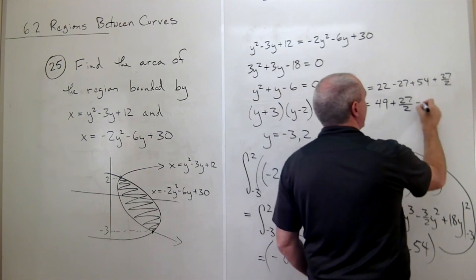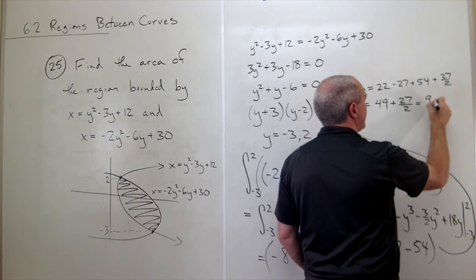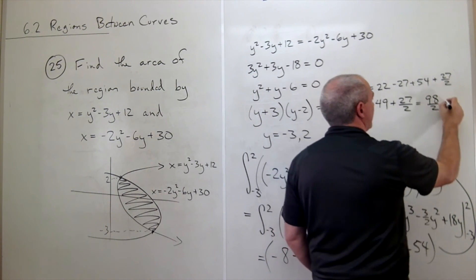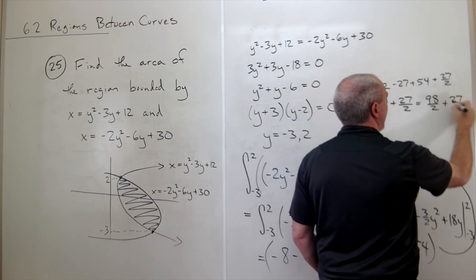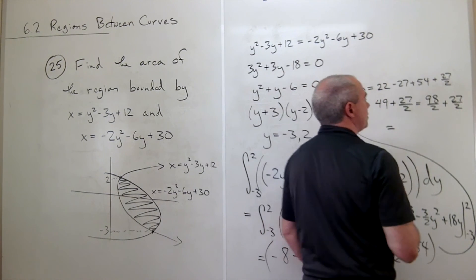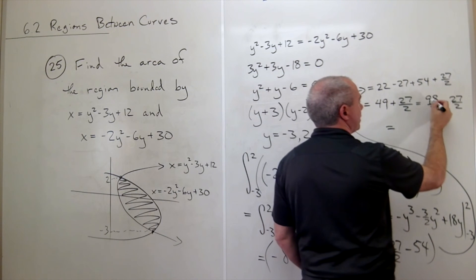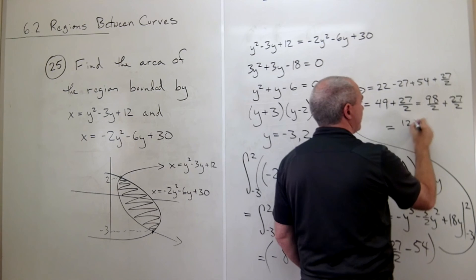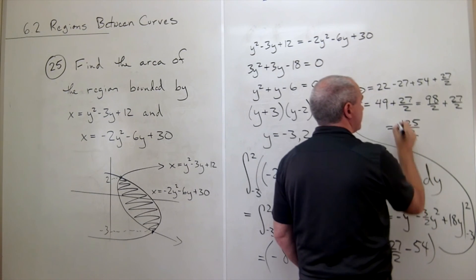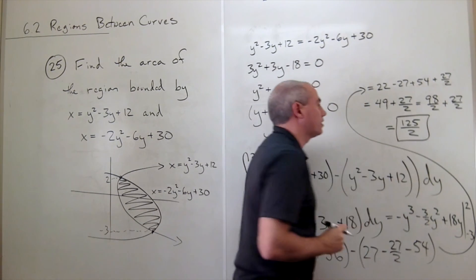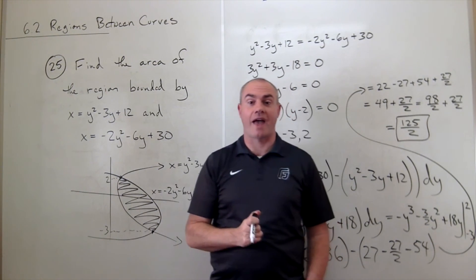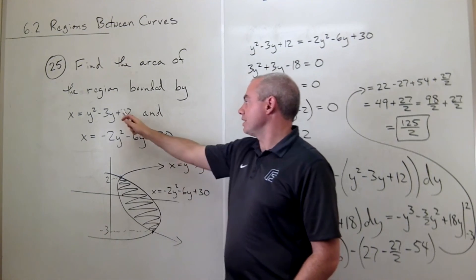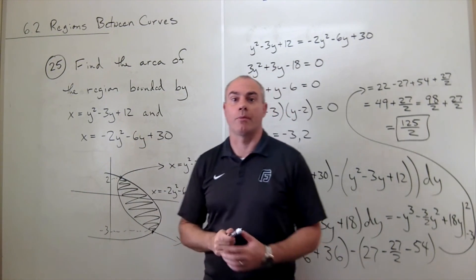Let's see, plus 7 is 105, plus 20, 125 over 2. And our answer is 125 halves. And that's how much area we have trapped between these two parabolic curves.